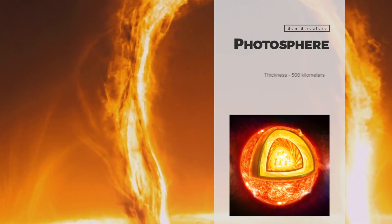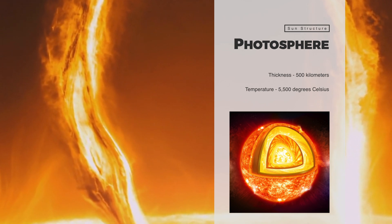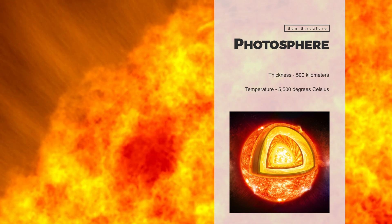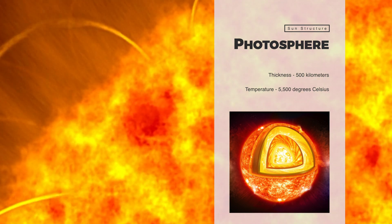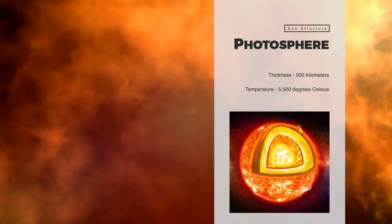The photosphere is the outermost layer of the Sun, with a thickness of about 500 kilometers and a temperature of about 5,500 degrees Celsius. As the density of the material decreases with temperature, it eventually becomes transparent and the photons can escape almost unimpeded to the outside.